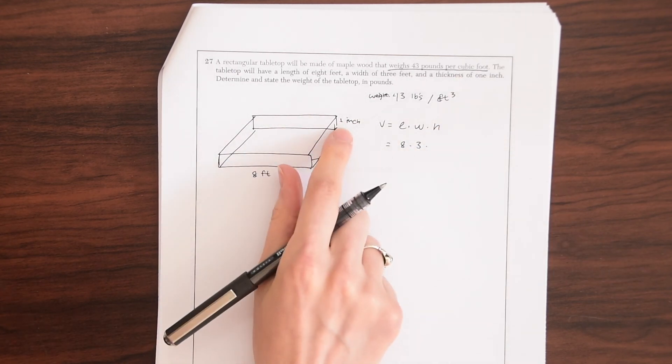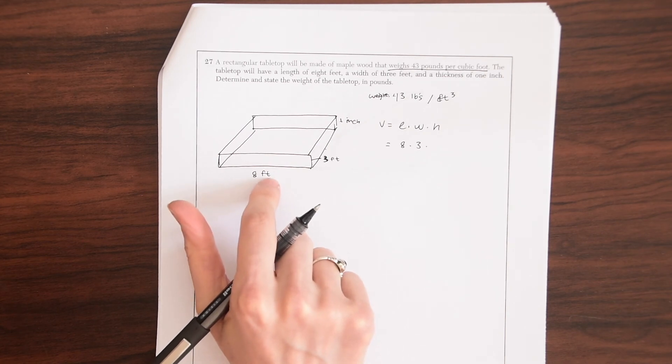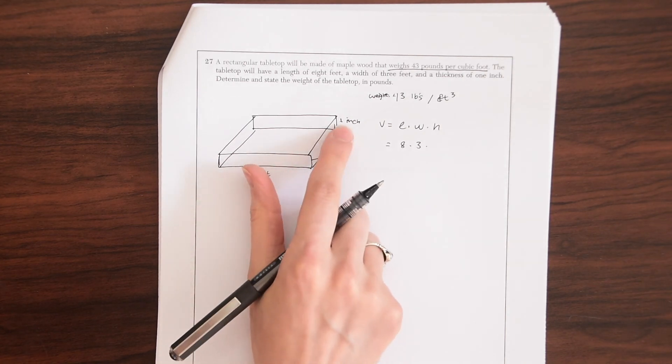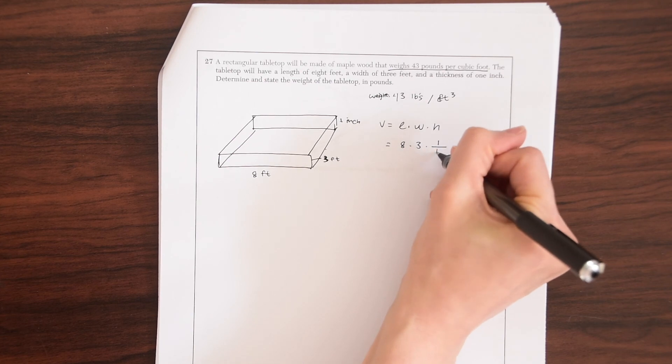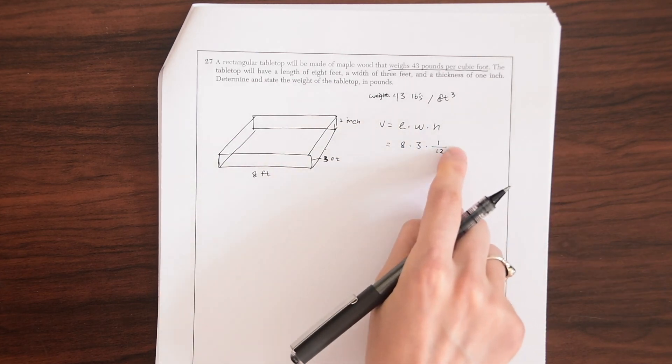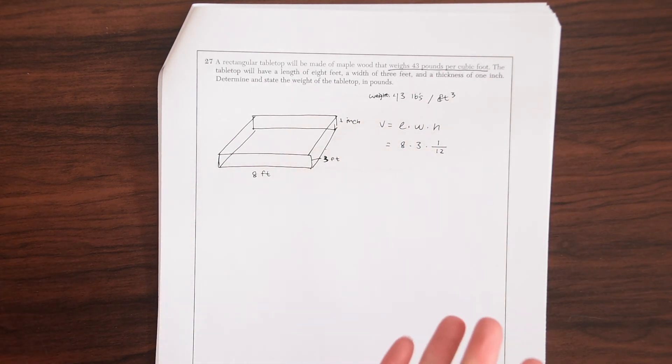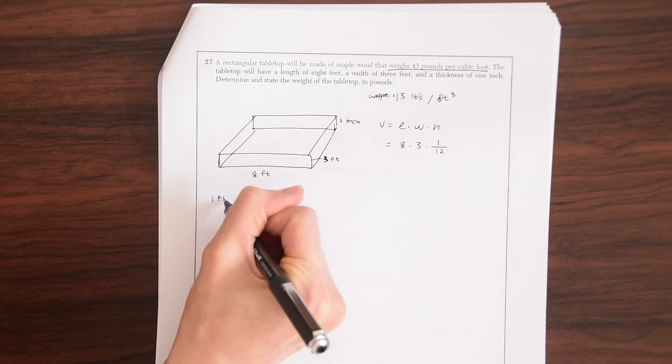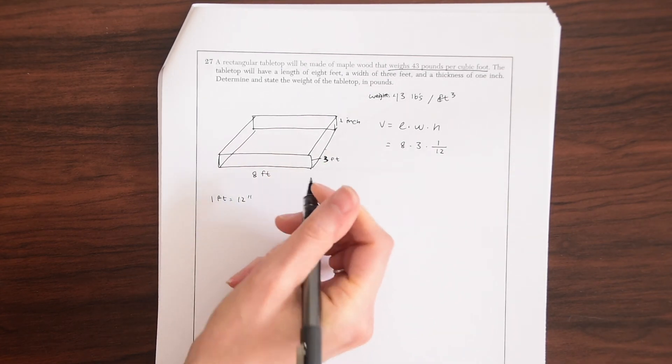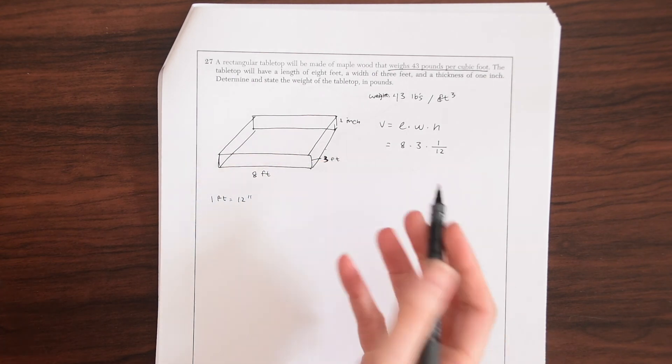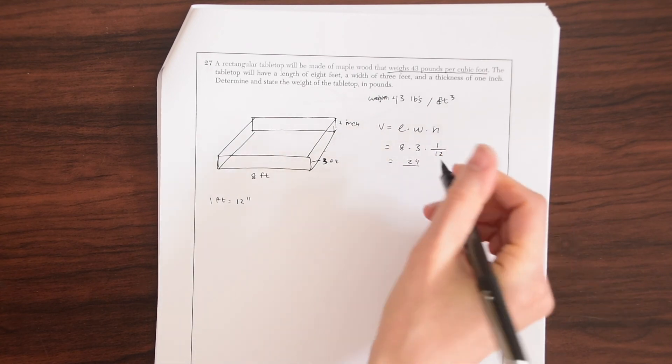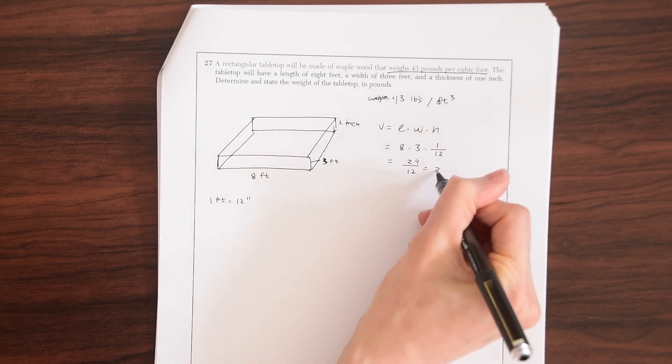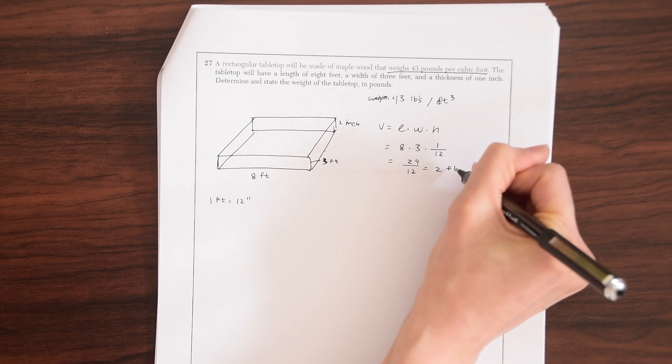And be careful here, because even though this looks nice and easy, 8 feet times 3 feet, remember the thickness isn't in feet, it's in inches. So there are 12 inches in one foot. So this is going to be 1 over 12, because we have only a part of an entire foot. So just a little side note, one foot equals 12 inches. Therefore, if we want one inch, we have to put it over 12. So now we're going to calculate this. So 8 times 3 is 24. And then we're putting this over 12, which will just give us 2 feet cubed.